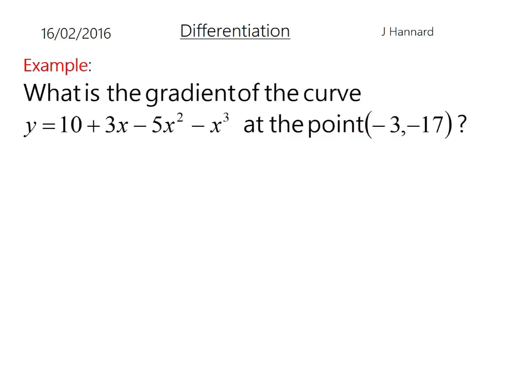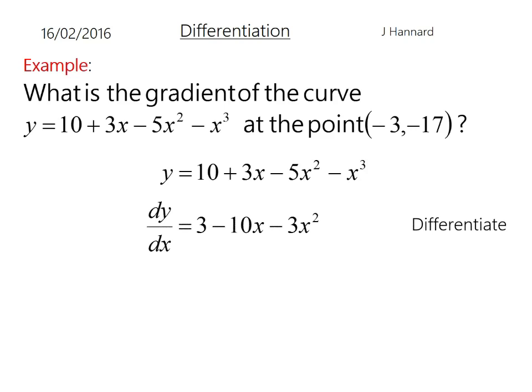A final example here. What's the gradient of the curve y equals that at the point minus 3 minus 17? So it's screaming out lots of double and triple negatives here once we get to the end of the dy dx. So that's the name of the curve we want to differentiate so we do left do right dy dx like that. And the constant disappears power to the front, power to the front, power to the front, you end up with that. But we want to put our x coordinate in so we want to replace every x we can see with a minus 3. So we'll end up with that which is 3 minus minus 30 which is going to become a plus 30 minus 3 times 9 which is going to be minus 27. So that equals 6 overall. So that is the gradient of the curve at that point.